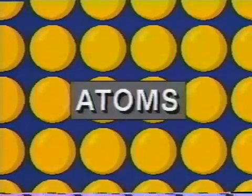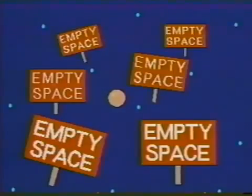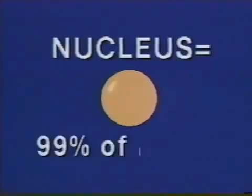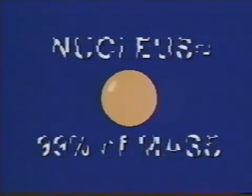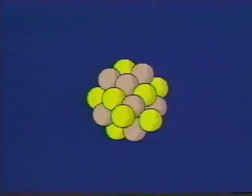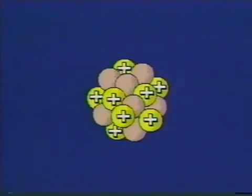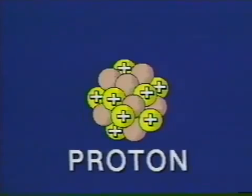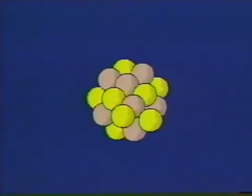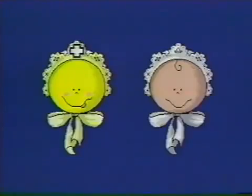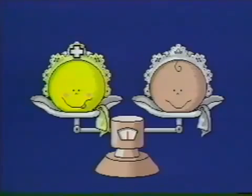Why do materials differ in this way? We believe that all substances consist of tiny particles called atoms. Our current model of the atom assumes that it is mostly empty space. And in a tiny volume called the nucleus, over 99% of the mass of the atom is concentrated. Further evidence suggests that the nucleus is made up of particles called protons, which are positively charged, and neutrons, which are neutral in charge. Neutrons and protons are almost identical in mass.